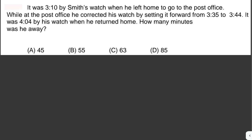It was 3:10 by Smith's watch when he left home to go to the post office. While at the post office, he corrected his watch by setting it forward from 3:35 to 3:44. It was 4:04 by his watch when he returned home. How many minutes was he away? There are two ways to solve this: subtract the correction from the total elapsed time, or add the two travel segments together.